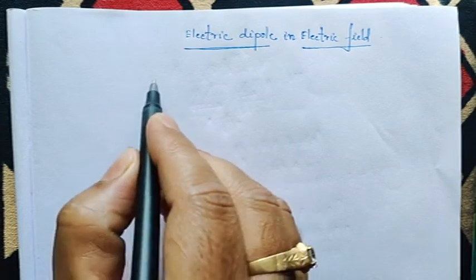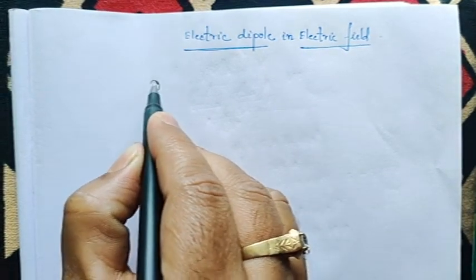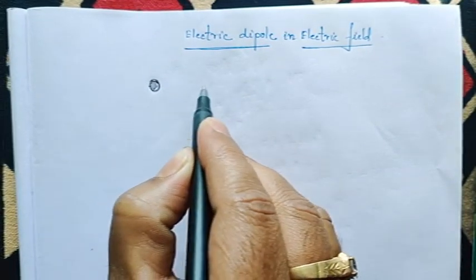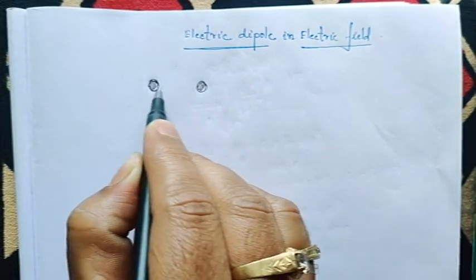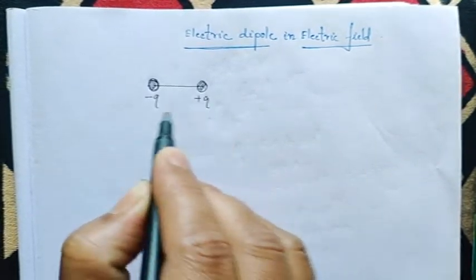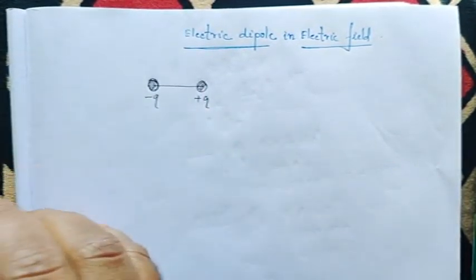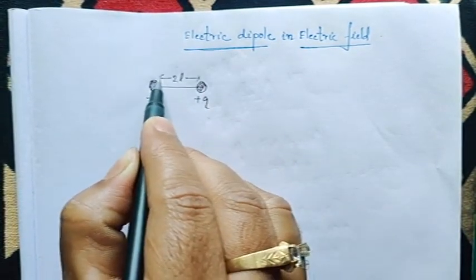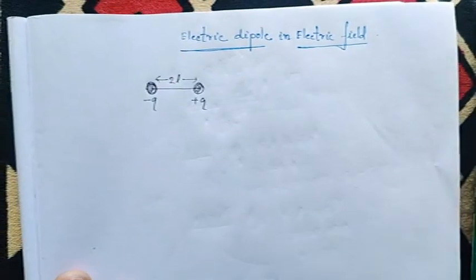Hi guys, today I am here to discuss about electric dipole in electric field. Before starting this session, I would like to talk about what a dipole is. A dipole is nothing but two equal and opposite charges separated by a small distance. If one charge is minus Q and the other is plus Q, then this combination is known as an electric dipole. This distance is generally denoted by 2L.